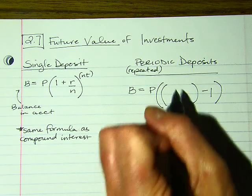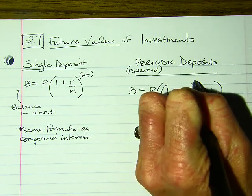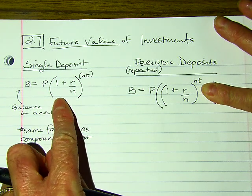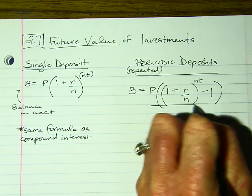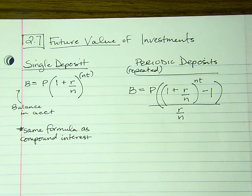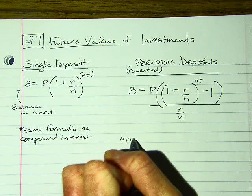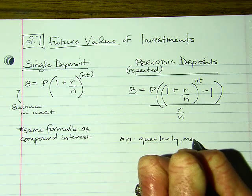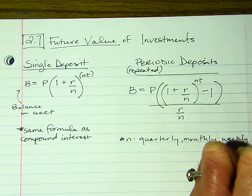I'll help you enter it in your calculator. The formula is: (1 + r/n)^(n×t), and that whole quantity minus 1, all over r/n. This is used for periodic investments. Remember, n represents quarterly, monthly, weekly, etc.